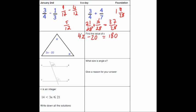So we just need to solve this equation. Add 20 to both sides. That would be 4x equals 200. And divide both sides by 4 will give us x equals 50 degrees.